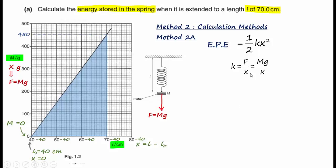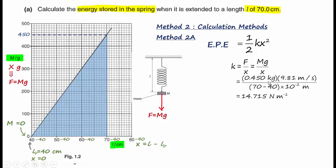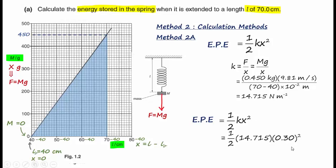k equals F over x, which is mg over x. At L equals 70 cm, x equals 70 minus 40, which is 30 cm, and the value of m is 450 grams. Substituting and converting to SI units gives a spring constant of 14.715 N/m. Substituting this back into the EPE equation with extension 30 cm yields the answer 0.662 joules.